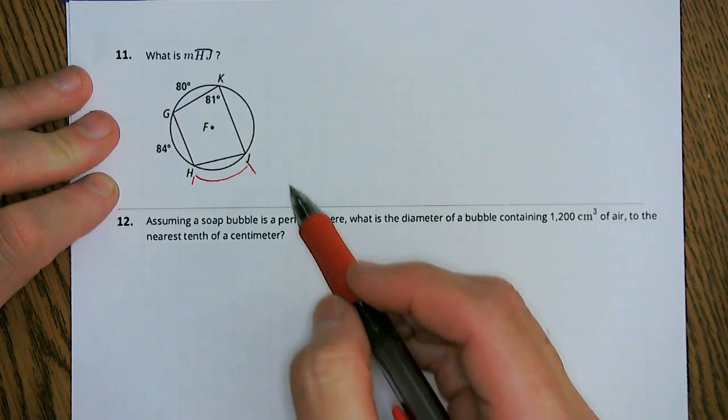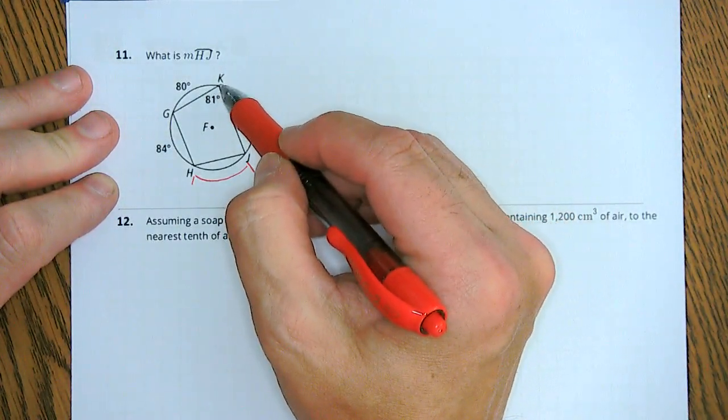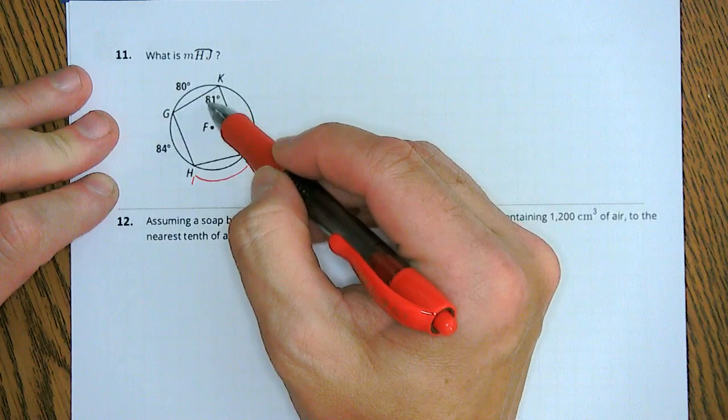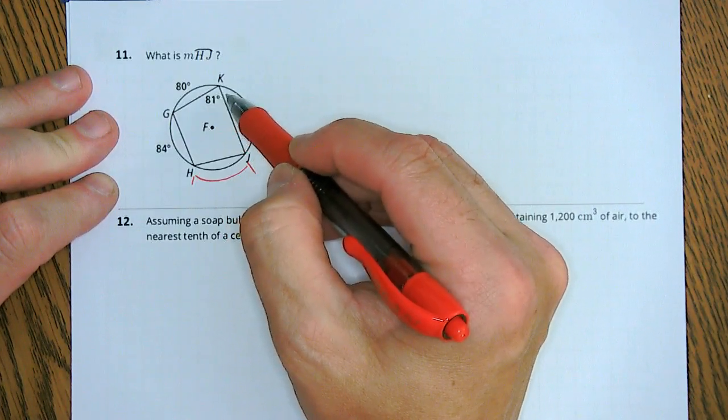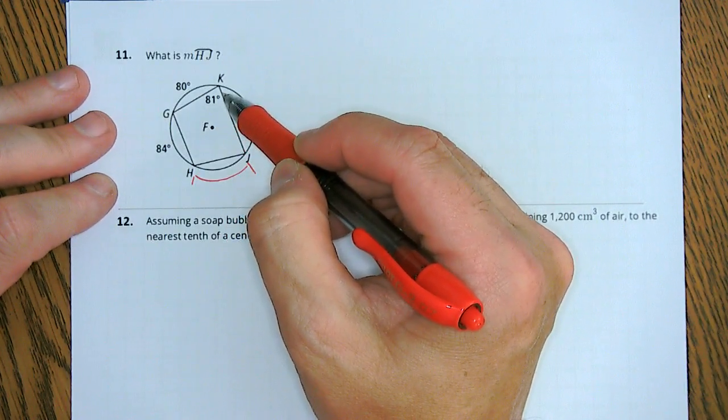Now, what can we see? We can see that this is 80, that's 84. This angle here is 81. So what can we do with this?